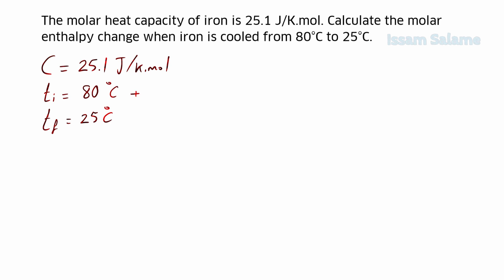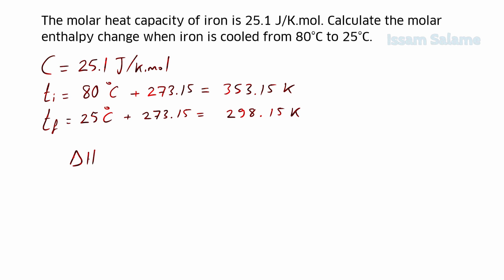We convert the initial temperature to Kelvin by adding 273.15 — the answer is 353.15 Kelvin. We do the same with the final temperature, adding 273.15 — the answer is 298.15 Kelvin. Then we write the formula for molar enthalpy change: ΔH = c × ΔT.